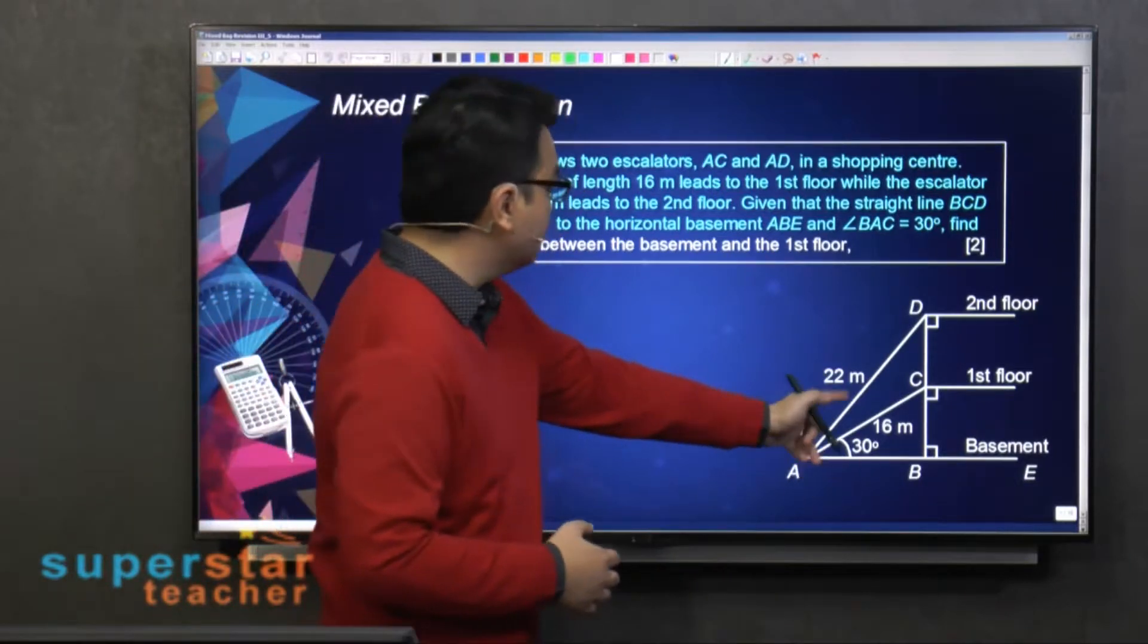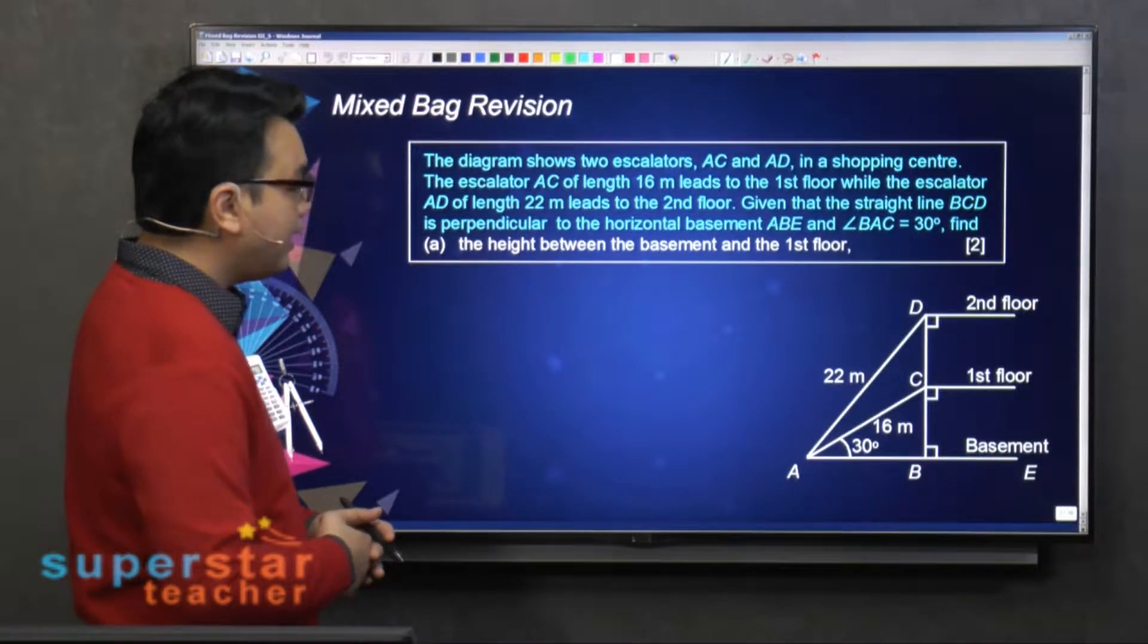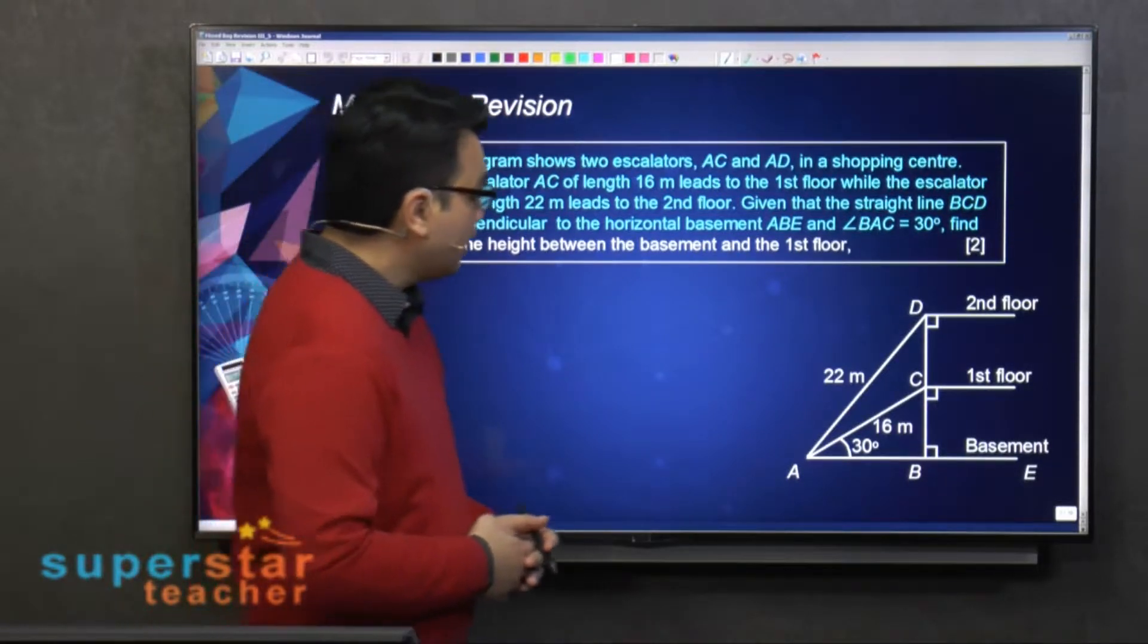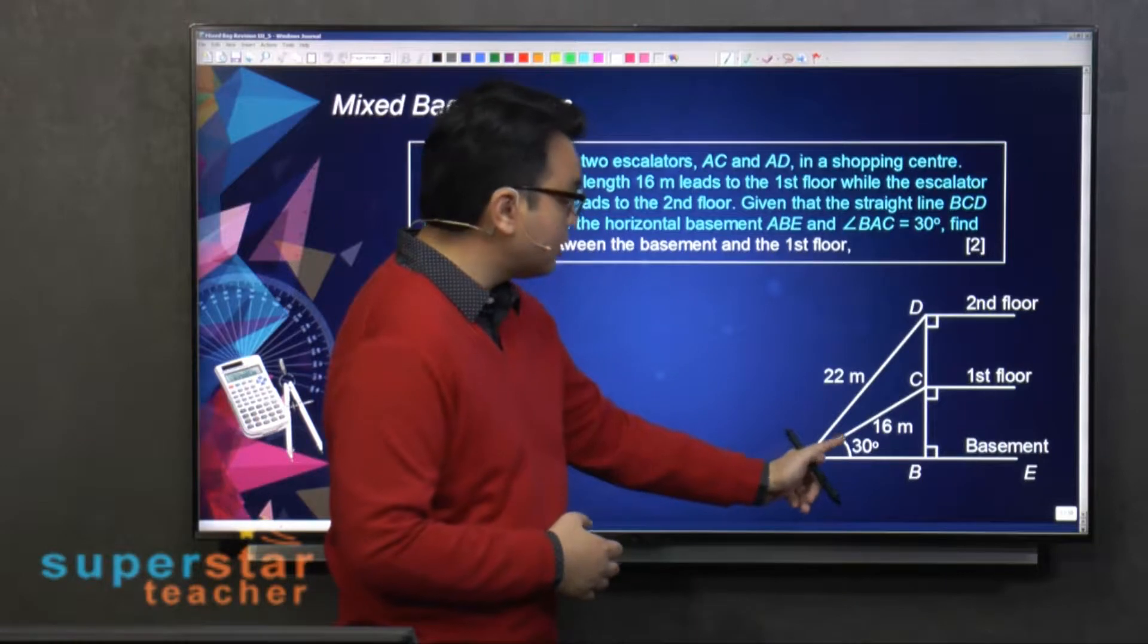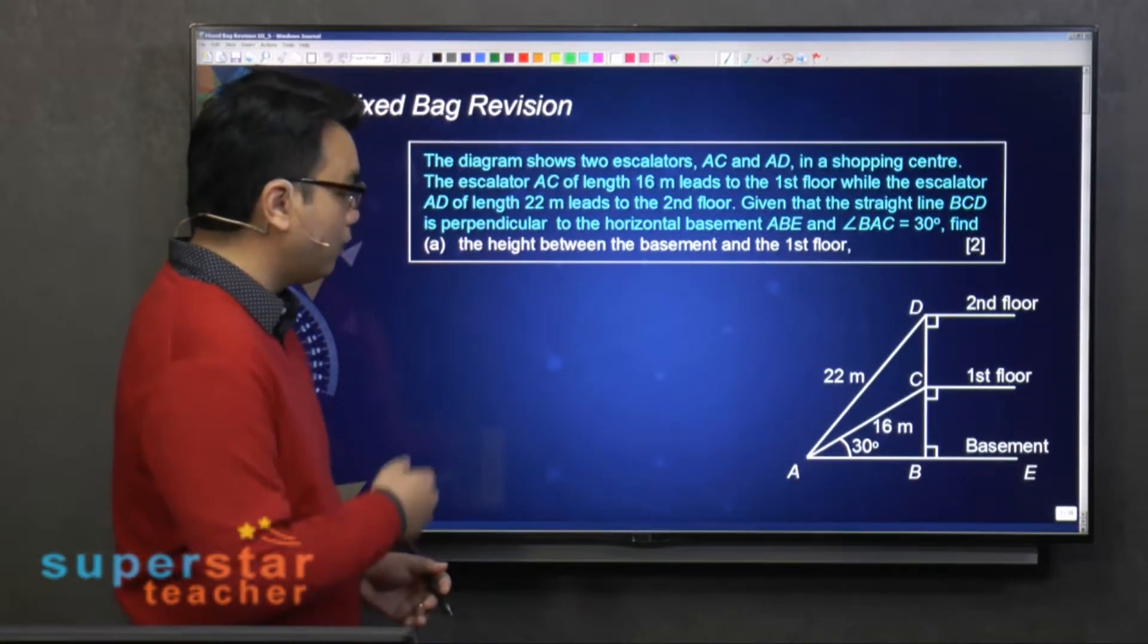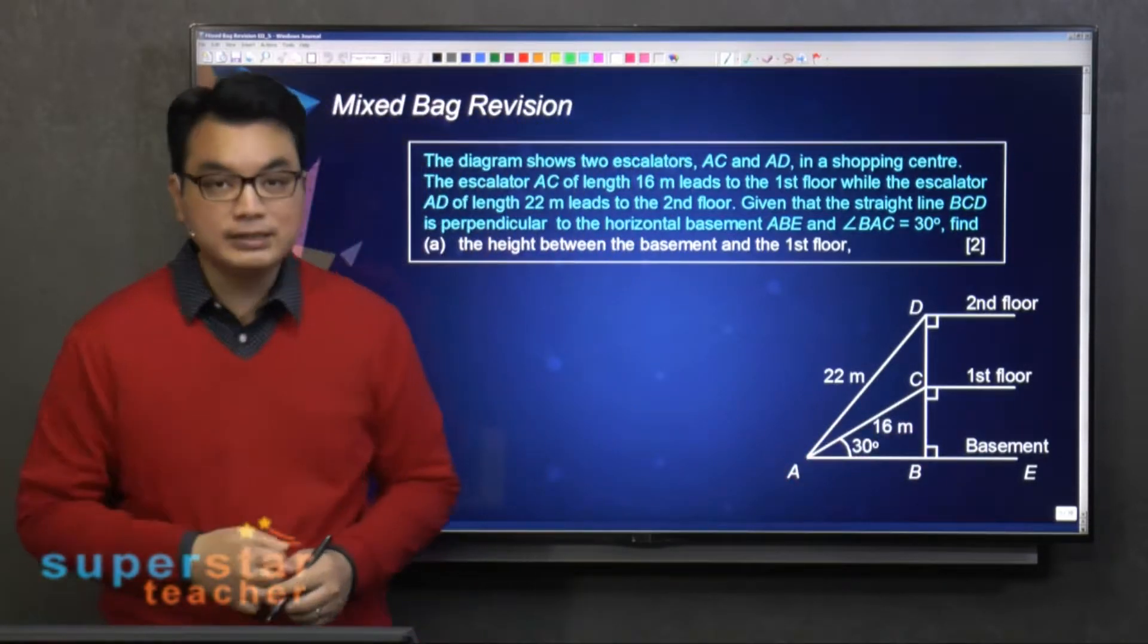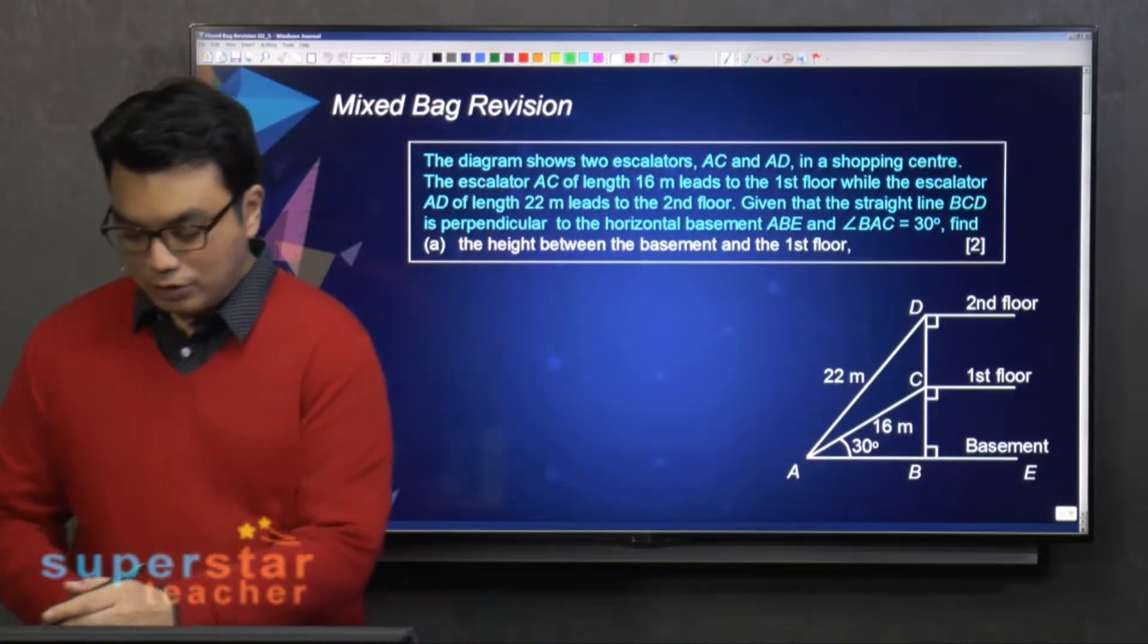As you can see over here, given that the straight line BCD is perpendicular to the horizontal basement ABE, and angle BAC equals 30 degrees, find the height between the basement and the first floor. This means finding BC. What is the length of BC? Very simple.